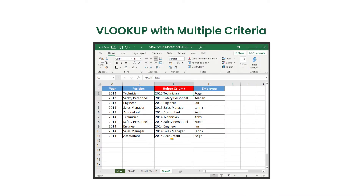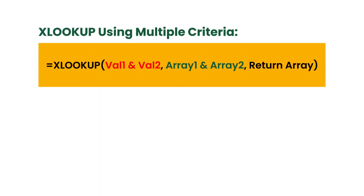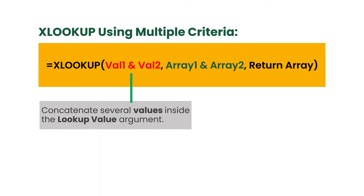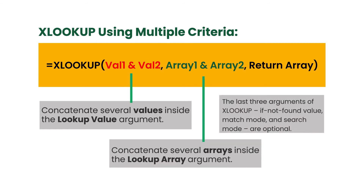In other words, XLOOKUP will not require a helper column to use multiple criteria, unlike VLOOKUP and HLOOKUP. Hence, to work with multiple criteria, you can concatenate lookup values and lookup arrays directly into the formula.